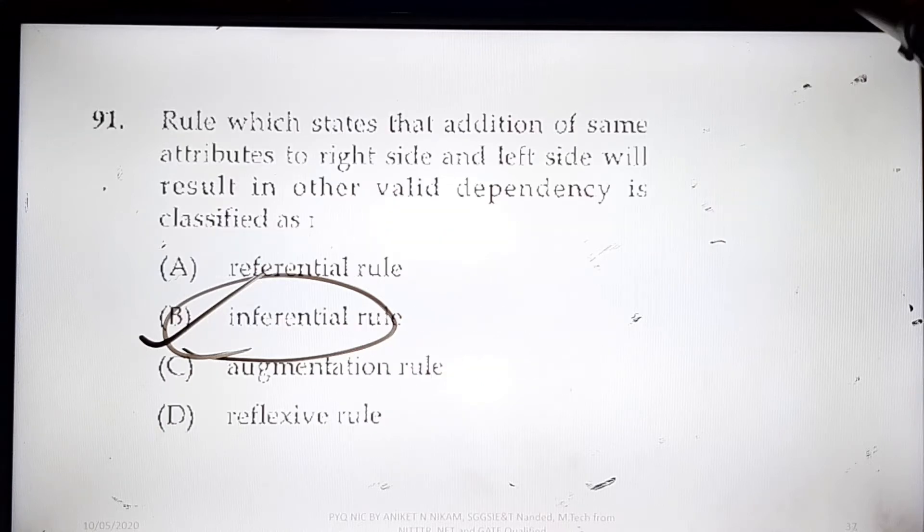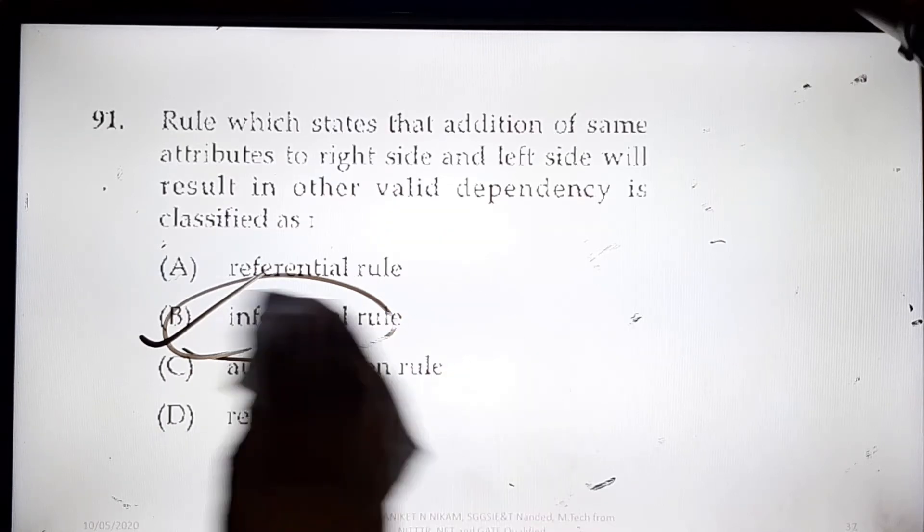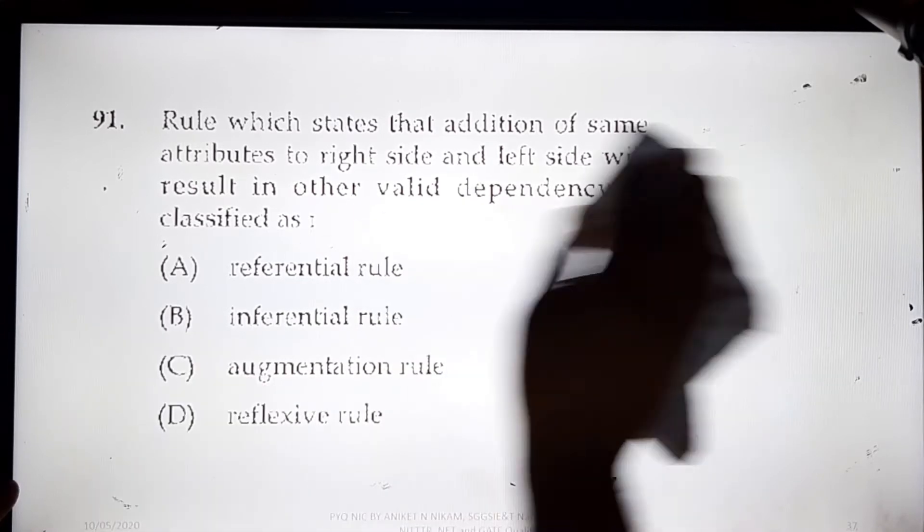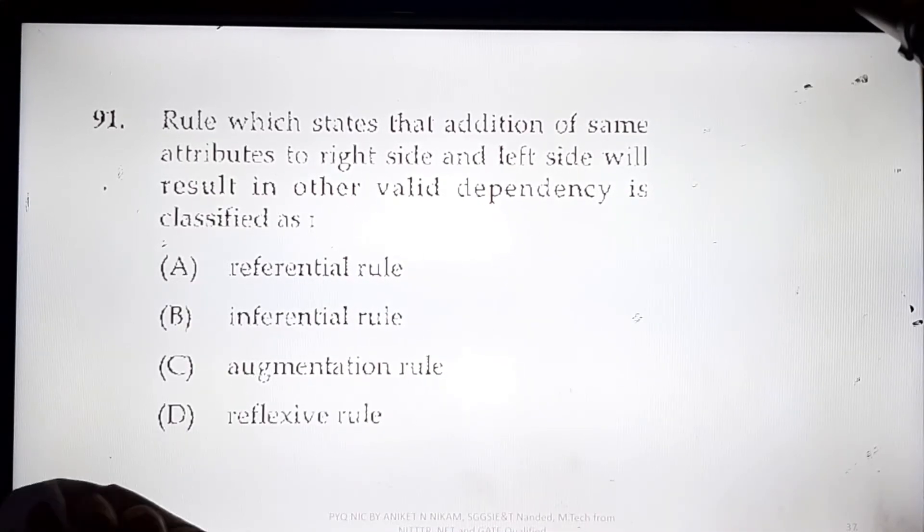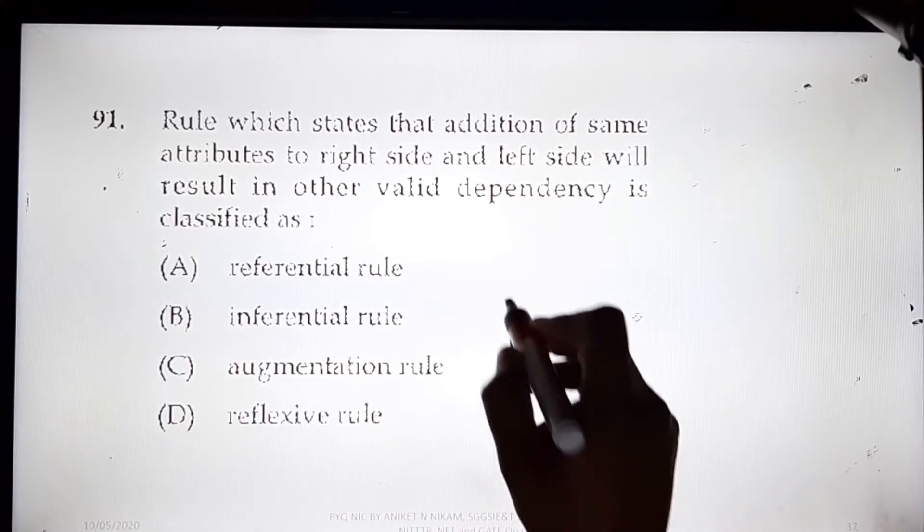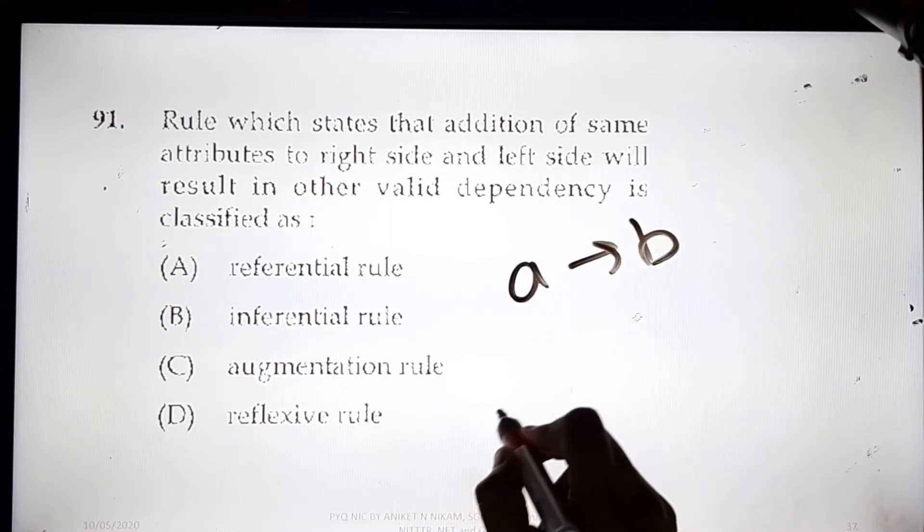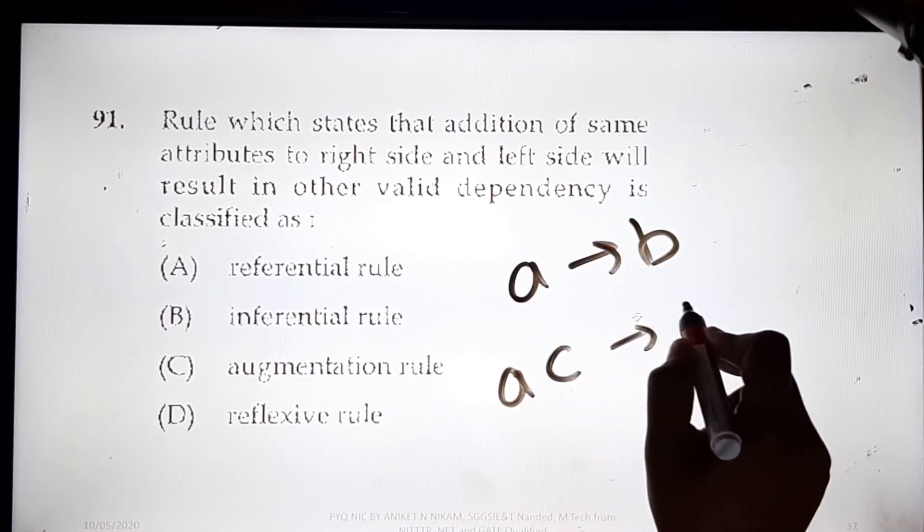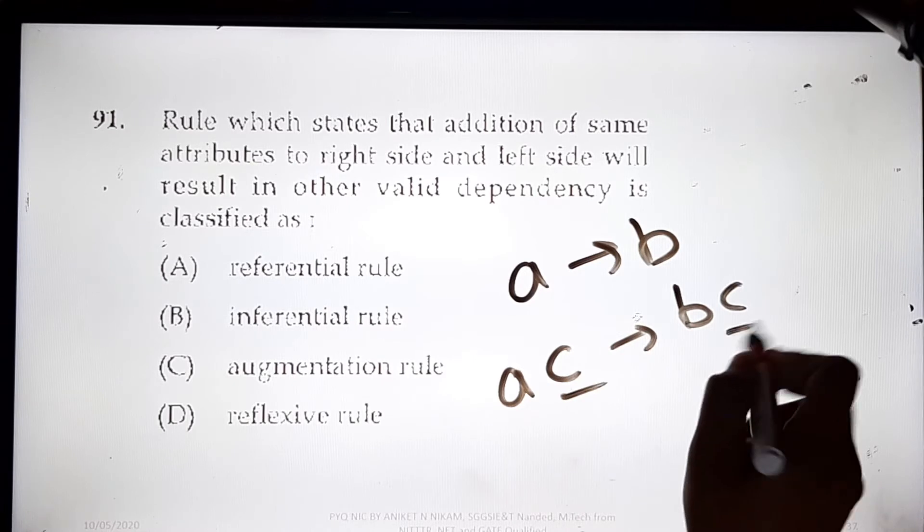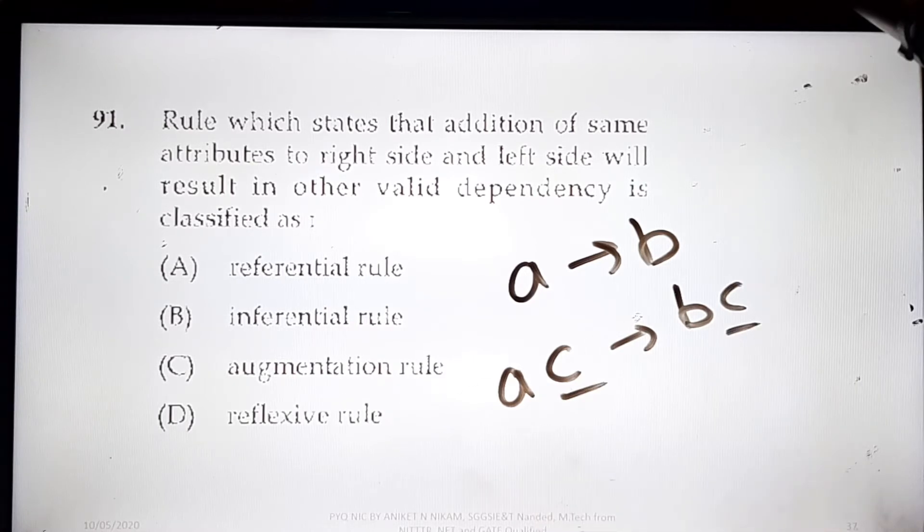Now, the rule which states that addition of the same attribute to right-hand side and left-hand side results in another valid dependency is classified as: suppose A determines B is there, I can write AC determines BC. I can add both attributes on the right-hand side. This rule is called augmentation rule.